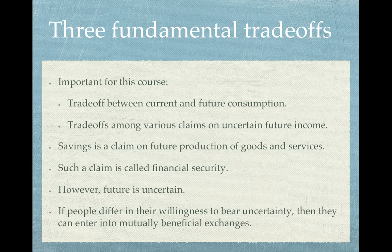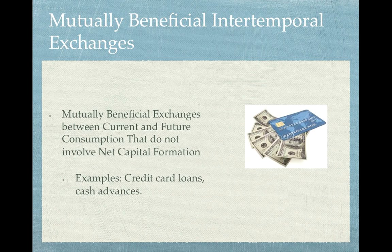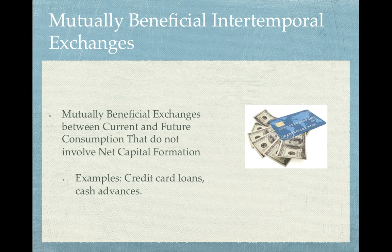We have to note that the future is uncertain, and if people differ in their willingness to bear uncertainty, then they can enter into mutually beneficial exchanges. The role of financial markets is to facilitate these exchanges. For example, if I want to save and you want to borrow, we have an opportunity for a mutually beneficial exchange. I save — meaning I reduce my current consumption — and you borrow — meaning you increase your current consumption. But by doing so, you allow me to increase my future consumption by the amount of interest I will earn on the loan I give to you.